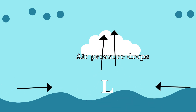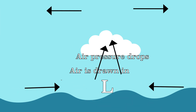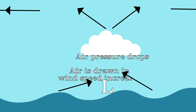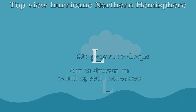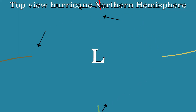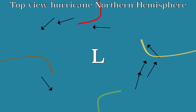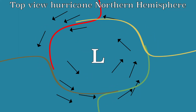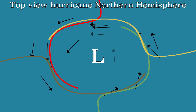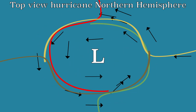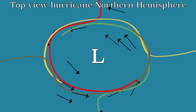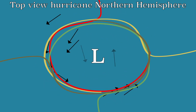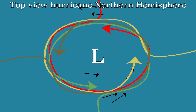As a result, more air is drawn in, which will rotate around the low pressure area due to the Coriolis effect. In the Northern Hemisphere, the air rotates counterclockwise and rises. Because the air turns inward, it will move faster and faster.